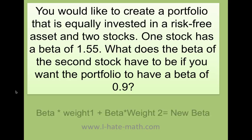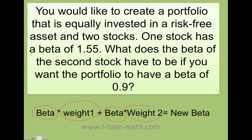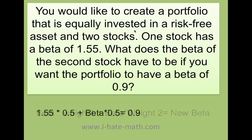So how do we do this problem? This is very easy. Remember, anytime you want to find beta and you have a portfolio, you need the beta of portfolio 1 times its weight, plus the beta of portfolio 2 times its weight, and that gives you the new beta. Here they tell me it's equally invested, so each one is going to be 0.5, because 0.5 plus 0.5 equals 1, which is the same as 100%.